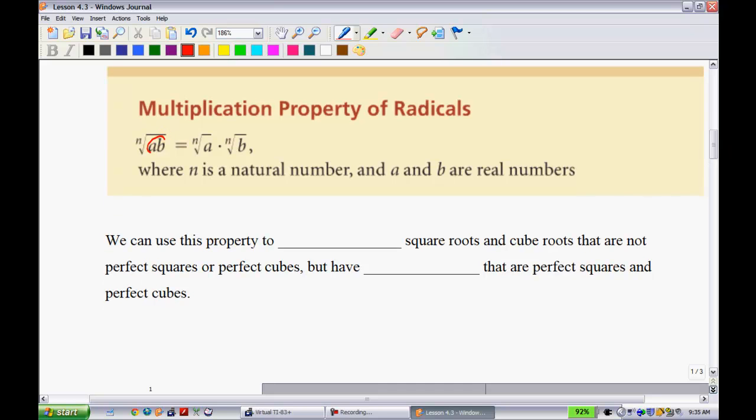Basically, what it says is whatever you have underneath the radical sign, you can split up as being A and B, and you'll get the same solution. Now we can use this property to simplify square roots and cube roots that are not perfect squares or perfect cubes, but have factors that are. Let's turn to the next page.